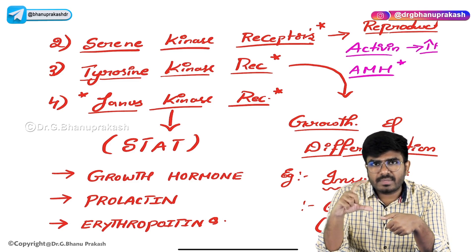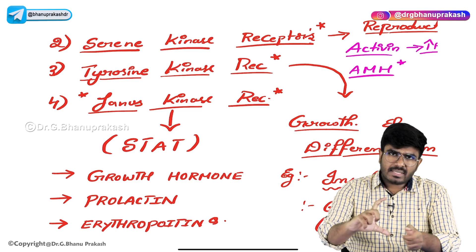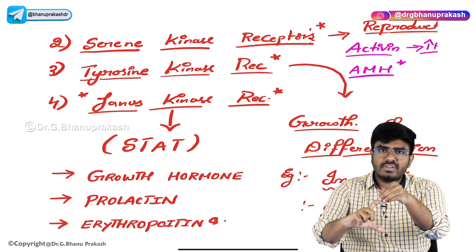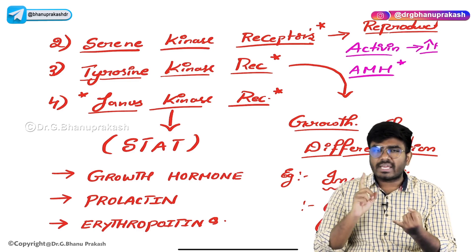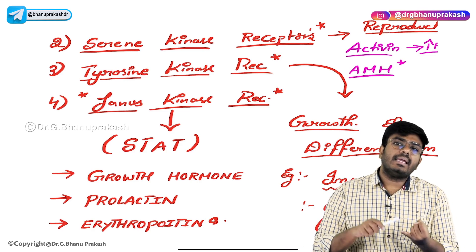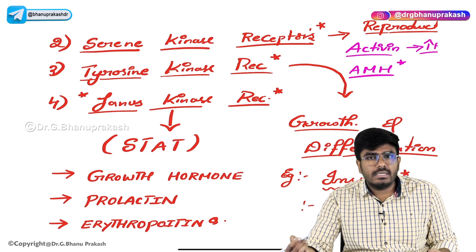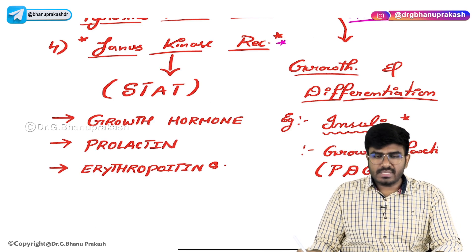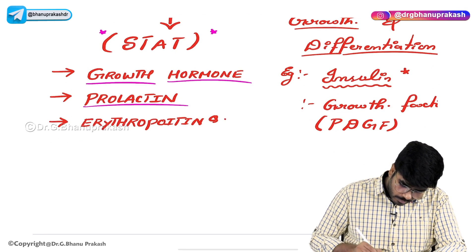Just to sum up: tyrosine kinase receptor is a type of receptor where tyrosine kinase enzyme is linked inside — there is no G protein. It's a cell surface, enzyme-linked receptor. Insulin and platelet-derived growth factors come and bind outside; inside the cell there is enzymatic activity — the tyrosine kinase. Serine kinase receptors are usually involved in reproductive activity, utilized by activin and anti-Müllerian hormone. Janus kinase receptors — whenever activated inside the cell, the STAT pathway is activated, and they are used by growth hormone, prolactin, and erythropoietin.